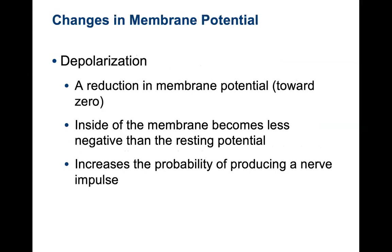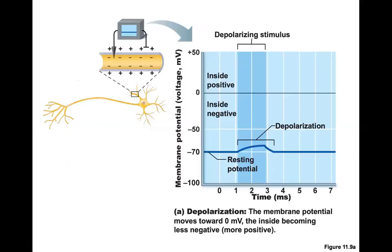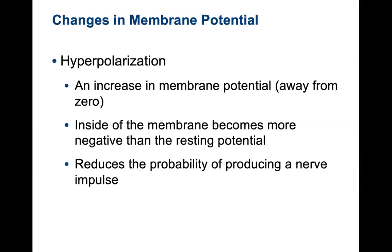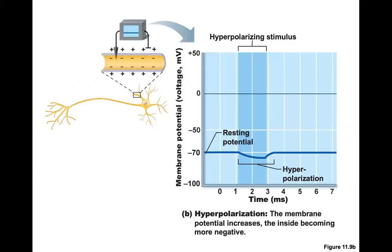The change in membrane potential known as depolarization is a reduction in membrane potential towards zero. Inside the membrane becomes less negative than resting membrane potential, and this increases the probability of producing a nerve impulse — meaning you might hit the point at which all voltage-gated channels open and you get a complete reversal of membrane potential, which would be the signal. If resting membrane potential is at negative 70 millivolts and we see a little depolarization event due to a stimulus, it becomes less negative. Hyperpolarization is the opposite — where something becomes more negative.